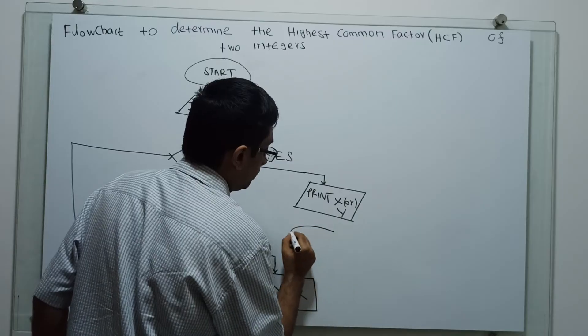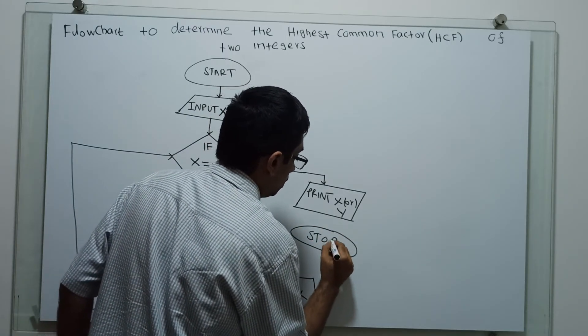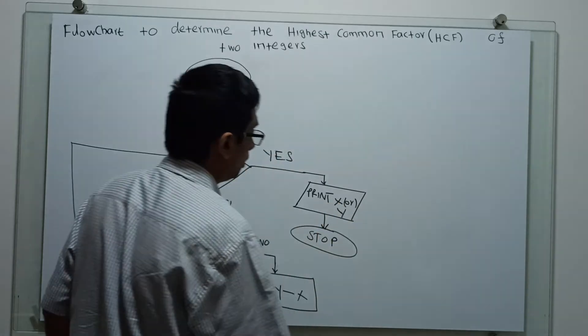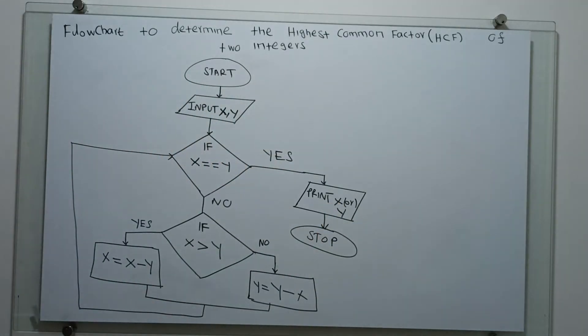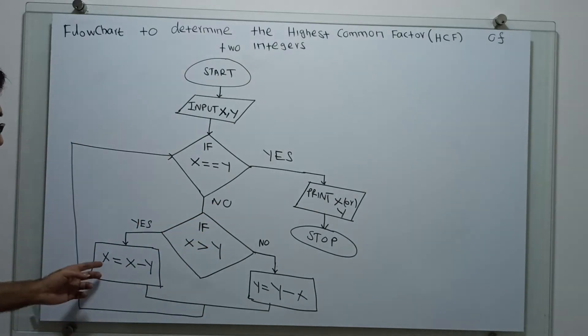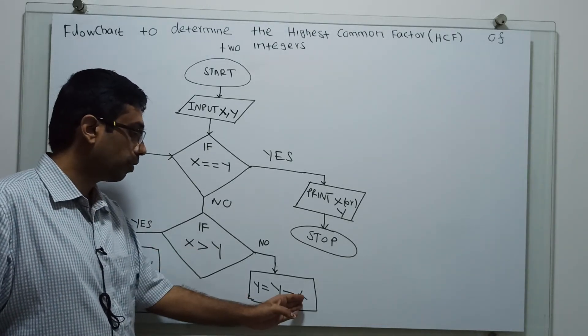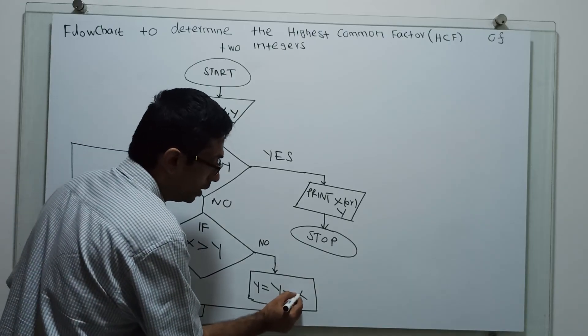Then it is the logical stop of the flowchart. Checking x equal to y - no means I am checking x greater than y. x greater than y yes means I am calculating x equal to x minus y. x greater than y false means y is greater than x. In this case I am calculating y equal to y minus x.